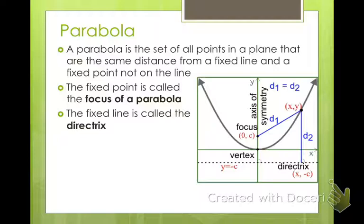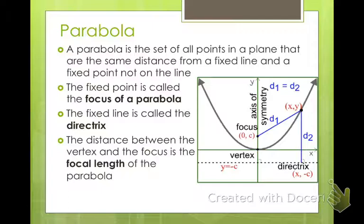That fixed point is called the focus, and the fixed line is called the directrix. The distance between the vertex and the focus is the focal length of the parabola. We're going to use that in our standard form, our general form of a parabola. That's important to know — make sure you write it down.